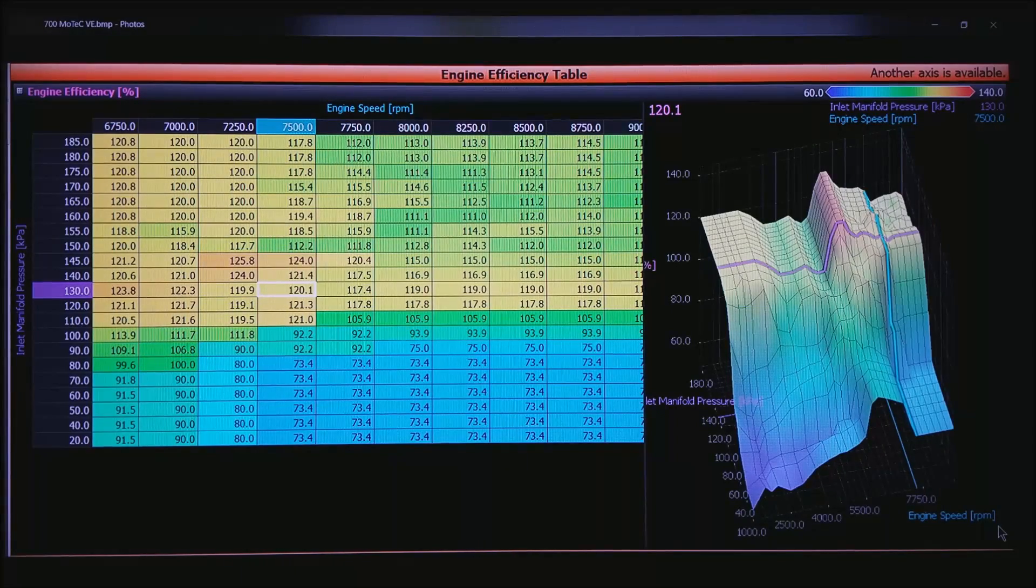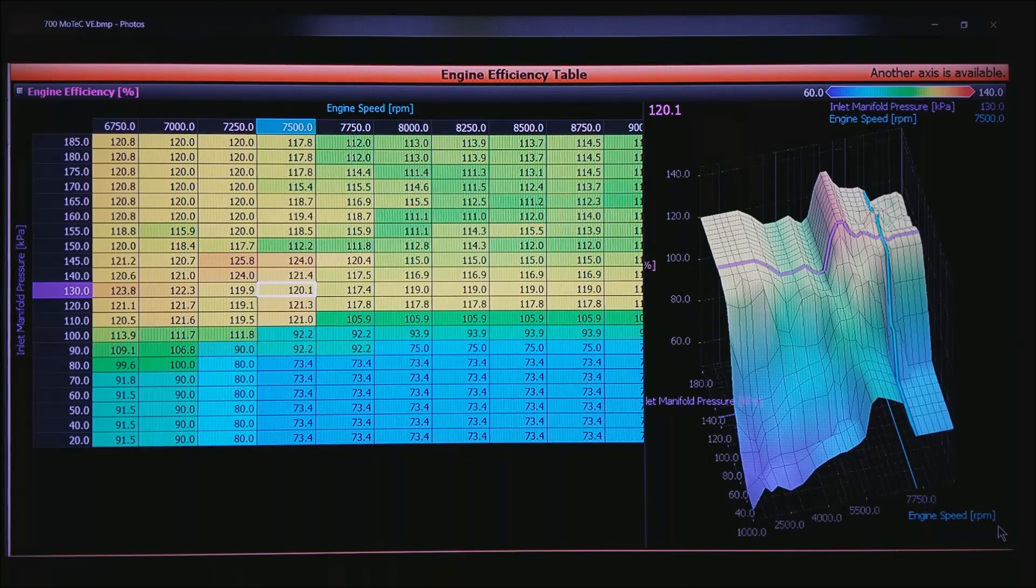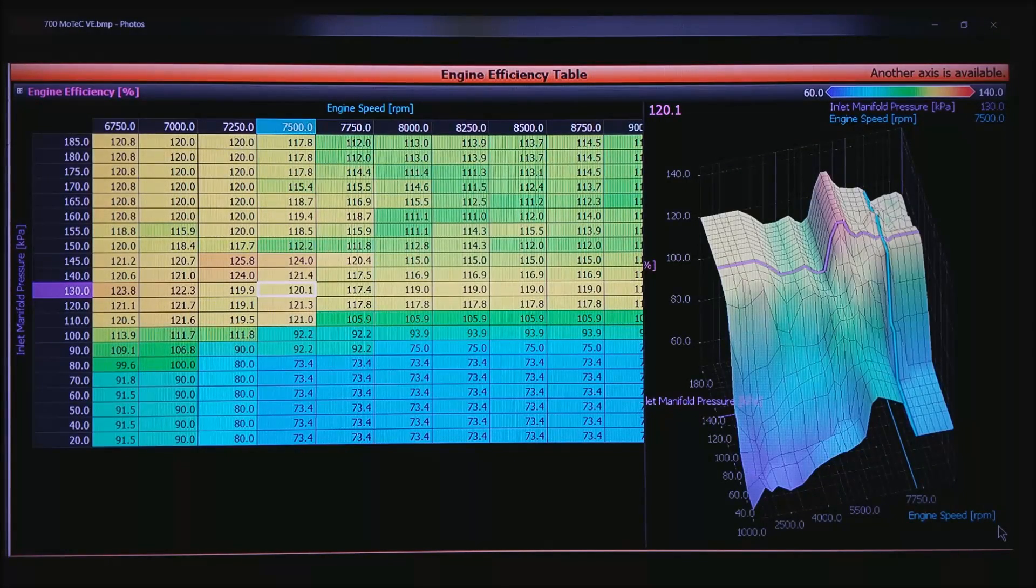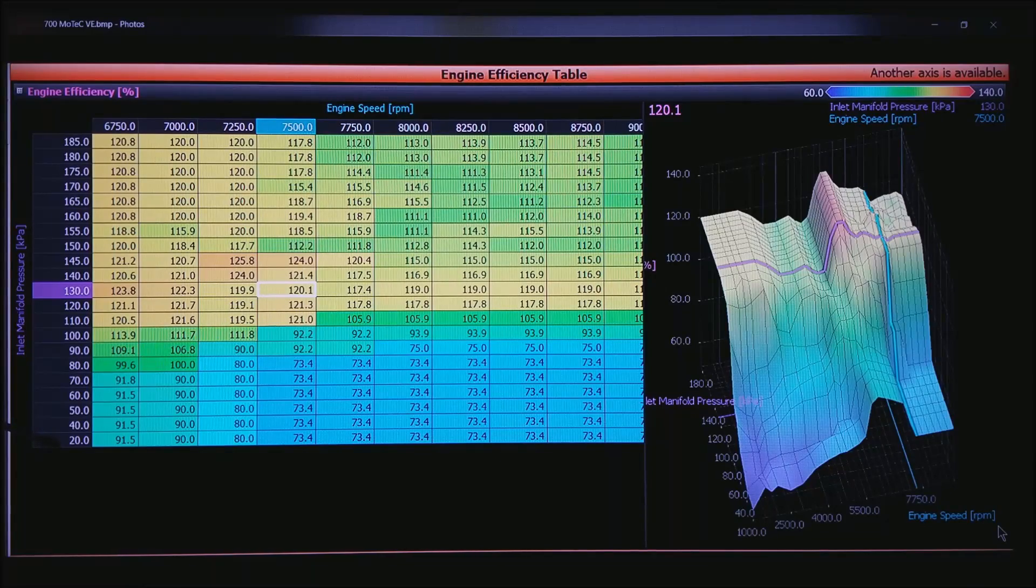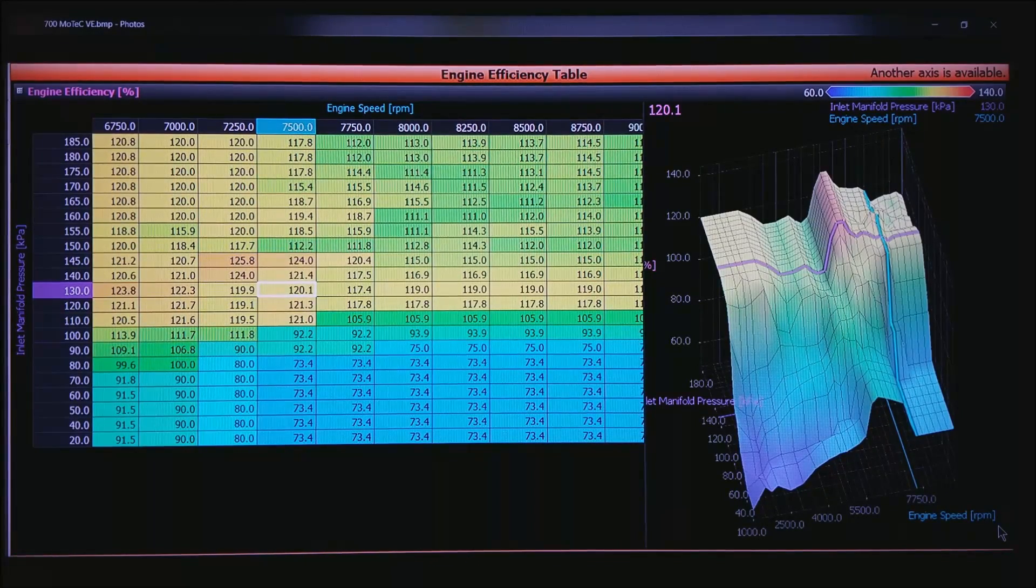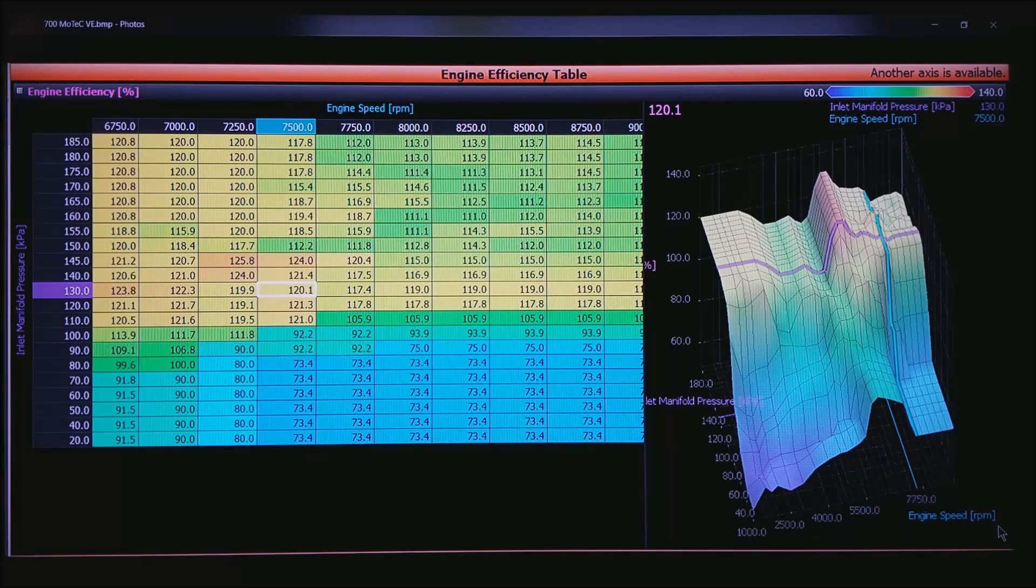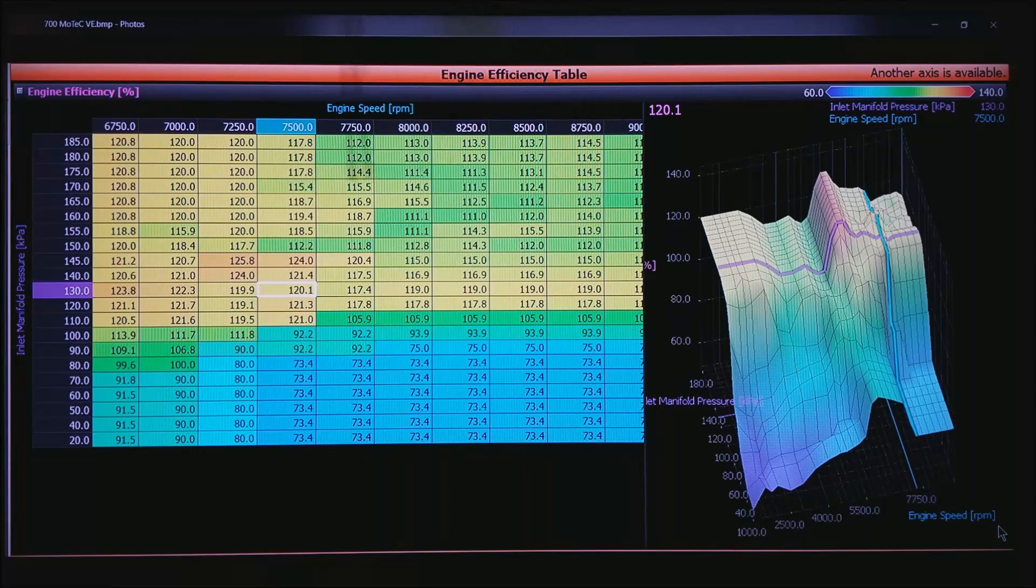This is a VE table off of a MoTeC. It is exactly the same thing though. This motor happens to go from about 20 kPa or 20 percent air to 185 kPa or almost two atmospheres of air in the intake manifold. Horizontally we've got RPM.